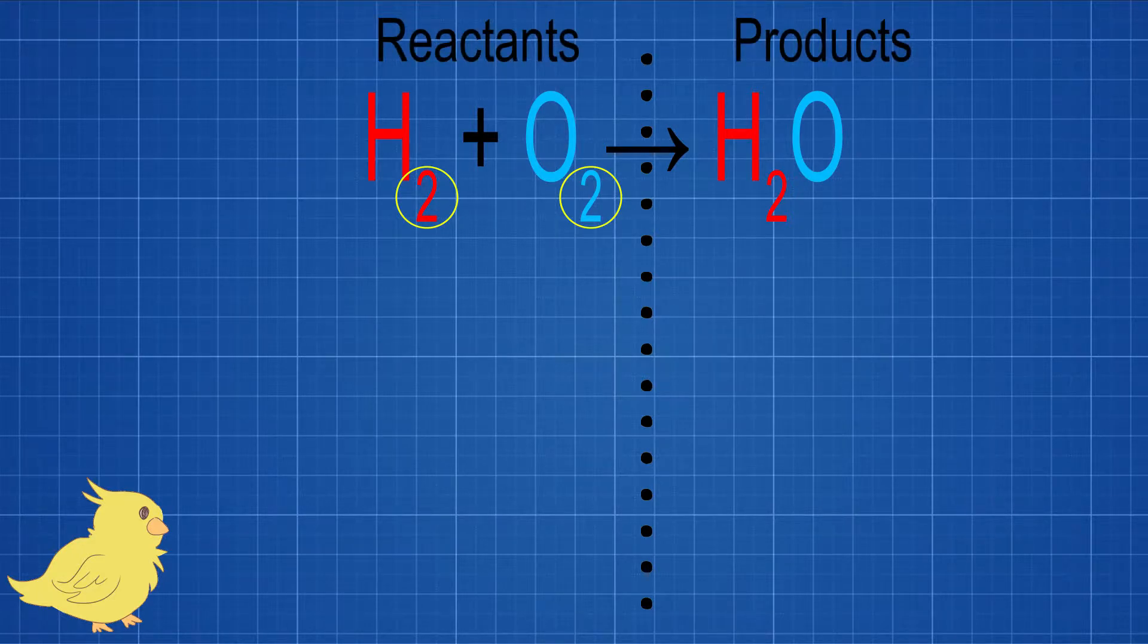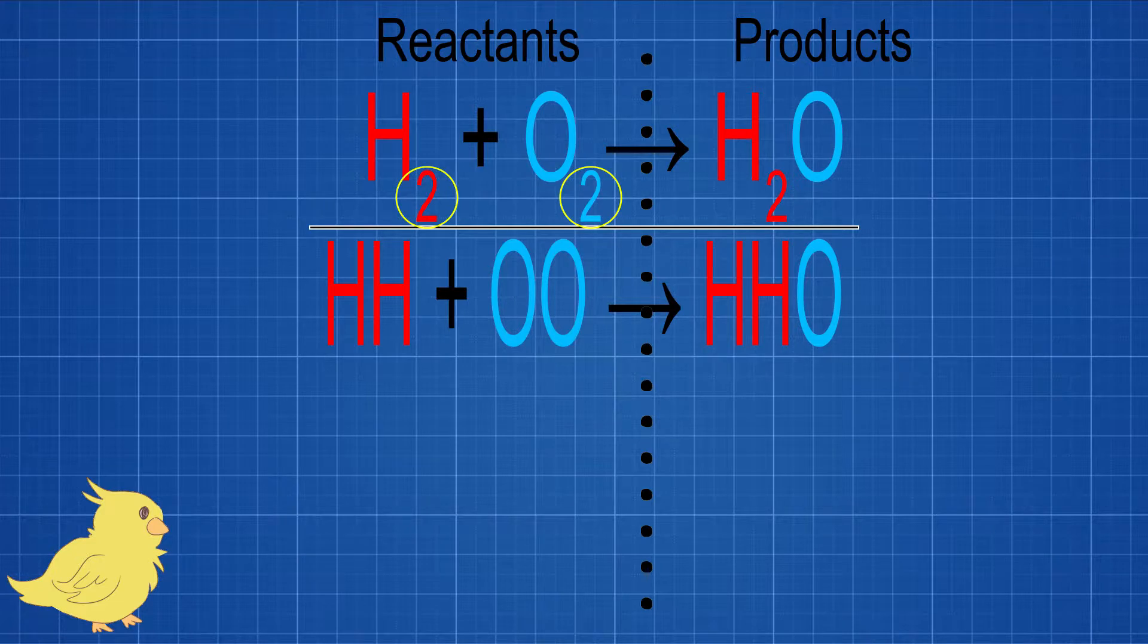The second thing we are going to do is we are going to write out the atoms that we are going to use. Our hydrogen, we've got one H, two H's and we are going to put them on the same line. The same with the oxygen. One O, two O's, they are also going to go on the same row.